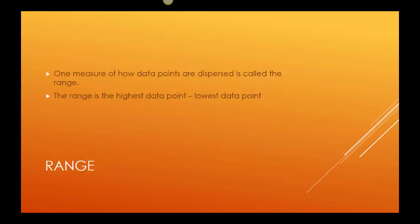But they ended up with the same average. So when we're looking at this, when we're saying things have the same average, but not necessarily reflect the same kind of data, we want to talk about dispersion. So one measure of how data points are dispersed is called the range. The range is simply the highest minus the lowest data point.